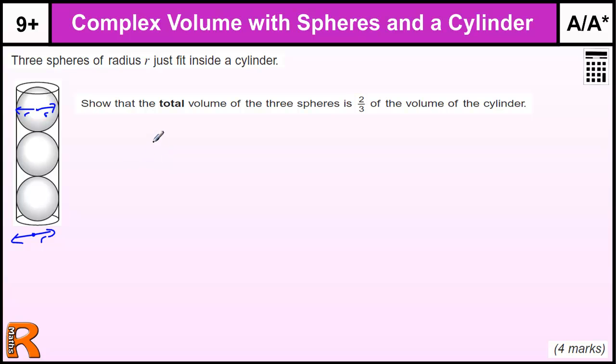If we look at the formula for a sphere, the formula we're given is four-thirds pi R cubed. Now we have three spheres, the radius is still R.